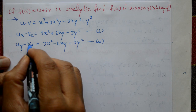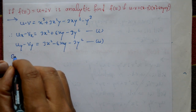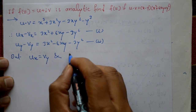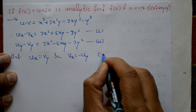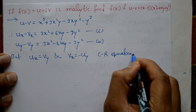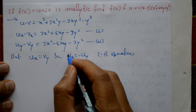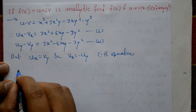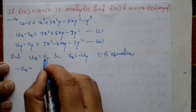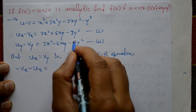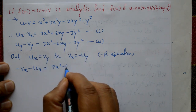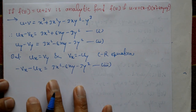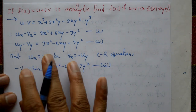Now change the left-hand side using the Cauchy-Riemann equations. The CR equations are: ∂u/∂x = ∂v/∂y and ∂v/∂x = -∂u/∂y. Substituting into equation number two, ∂u/∂y becomes -∂v/∂x, and ∂v/∂y becomes ∂u/∂x, giving ∂u/∂x equals 3x² - 6xy - 3y². This is equation number three.